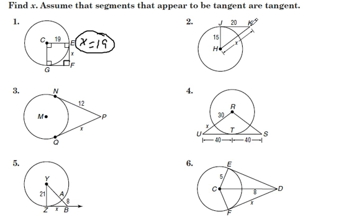For number two, we have a tangent line JK. And tangent lines are perpendicular to radii formed in a circle. So then we can use Pythagorean Theorem to solve for x. 15 squared plus 20 squared equals x squared. 15 squared is 225, 20 squared is 400.